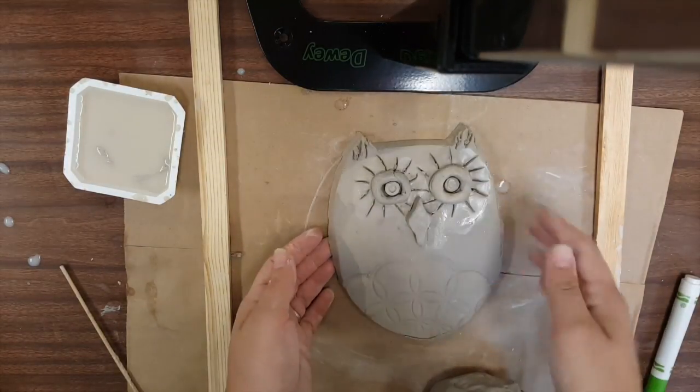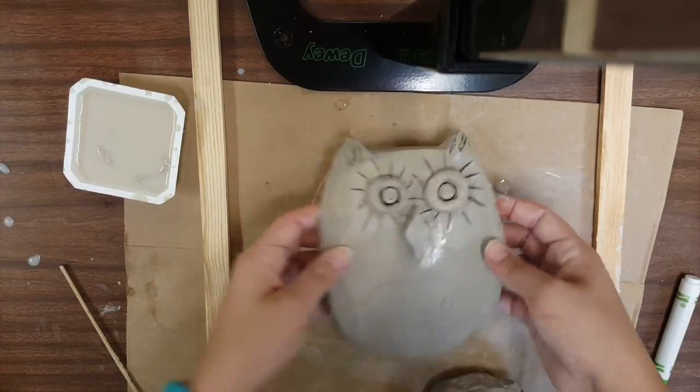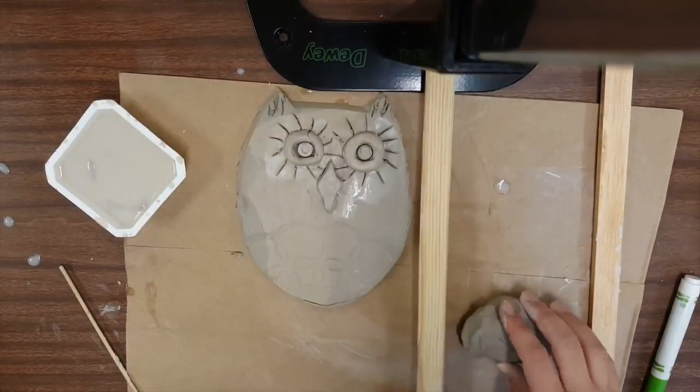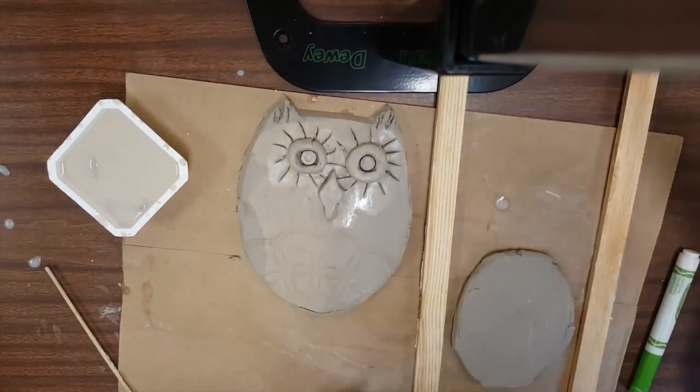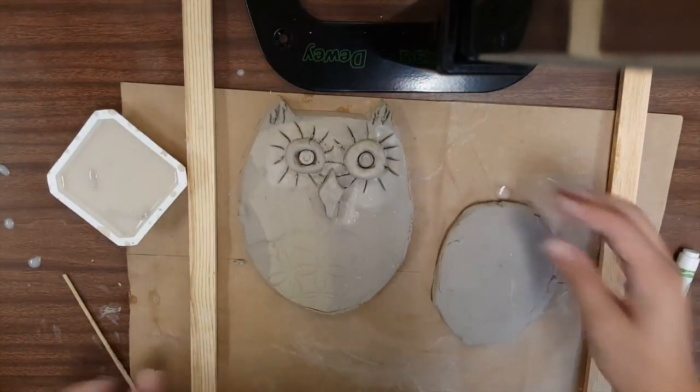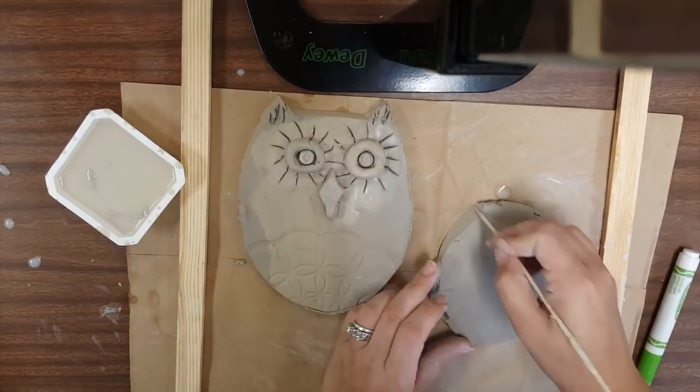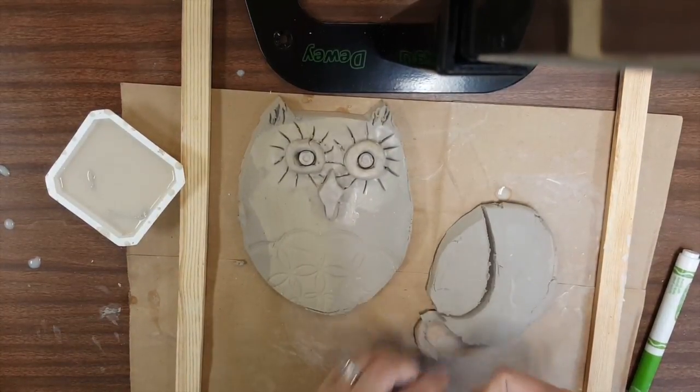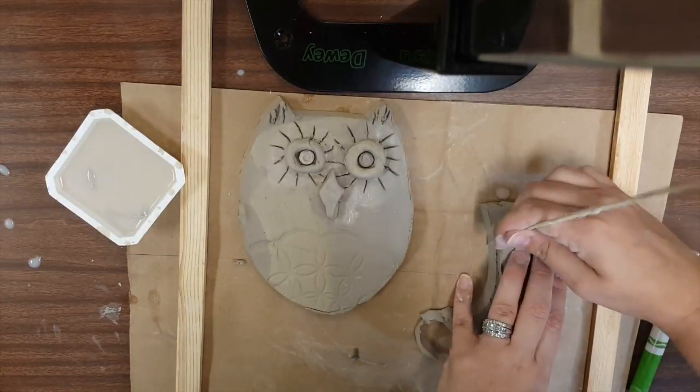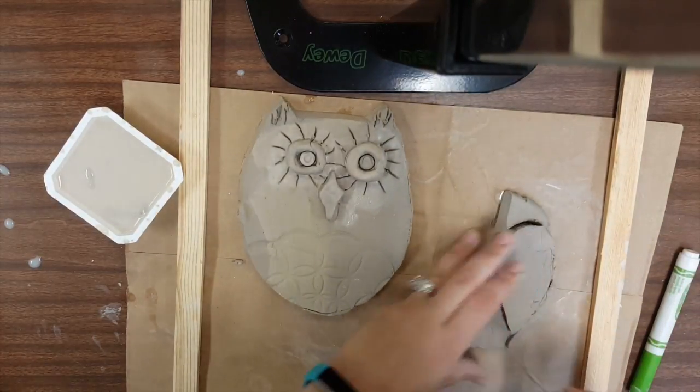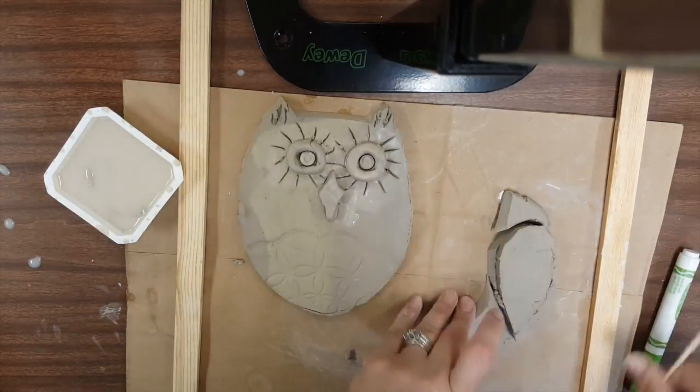The last thing we're going to be adding are the wings. You could fold wings in if you had a longer or wider owl shape. For me I think attaching is the best method. So I'm going to roll out a small slab and use my tool again to draw my shape, making a teardrop shape wing. I can use that as my template to create a second one, just stacking them on top of each other and tracing them around.